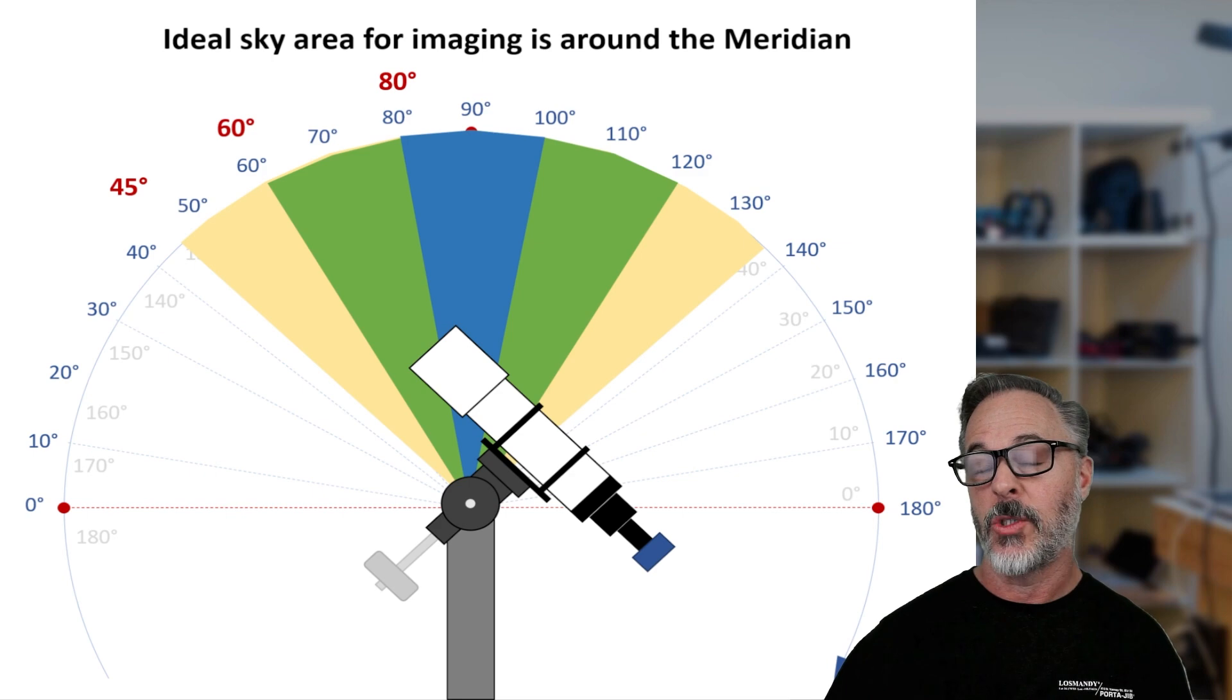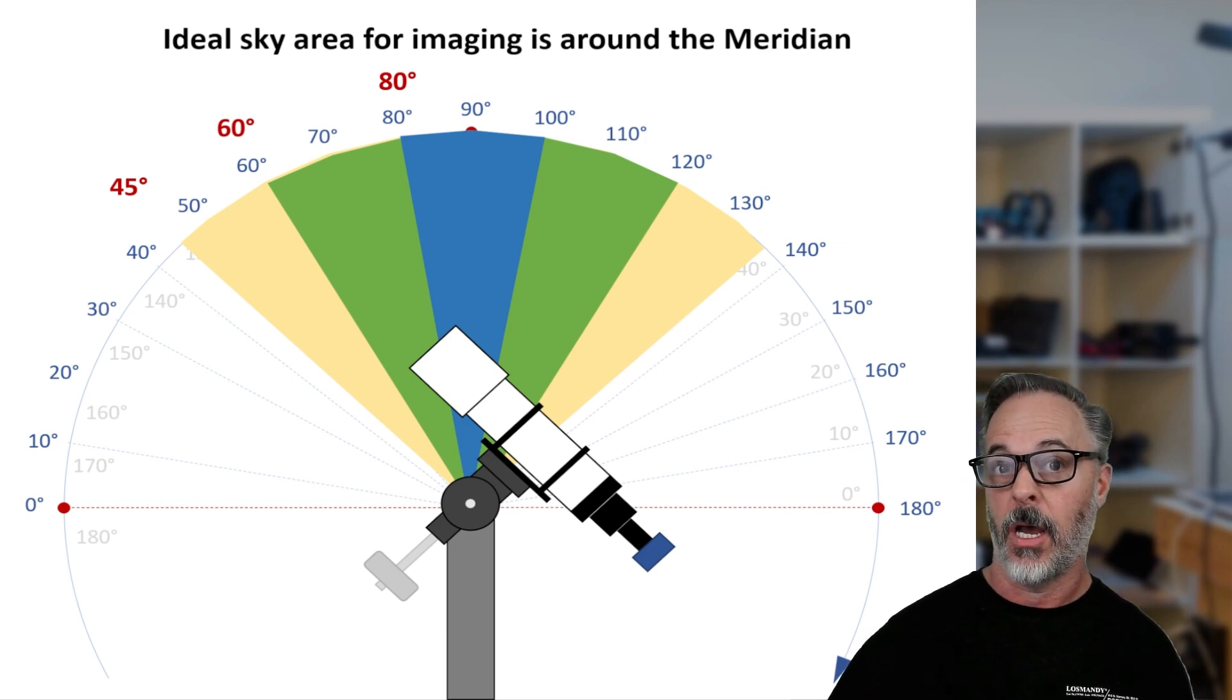So oftentimes when you talk about people who are imaging and really being thoughtful about this, they have a range they shoot around the meridian. It could be, you know, 10 degrees on each side. It could be 30 degrees on each side. It could be all the way down to 45 degrees altitude.